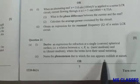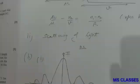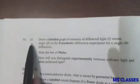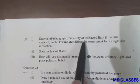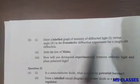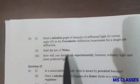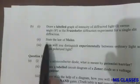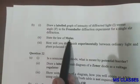Name the phenomena due to which the sun appears reddish at sunset. That is the scattering of light. Part B, first part: Draw a labeled graph of intensity of diffracted light versus the angle theta. So this is the graph.